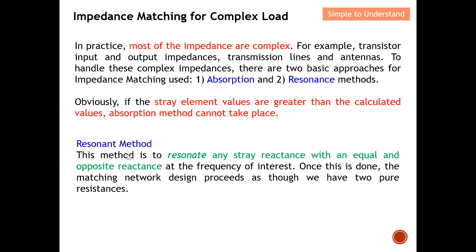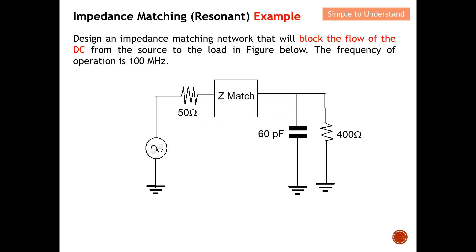What is the resonant method? The resonant method is to resonate any stray reactance with an equal and opposite reactance at the frequency of interest. For example, if I have a stray capacitor, I need to add an inductor so that its effect cancels the stray capacitor's effect. Essentially, the stray capacitor is cancelled away by the additional inductor added to the circuit. Once this is done, the matching network design proceeds as though we have two pure resistors.